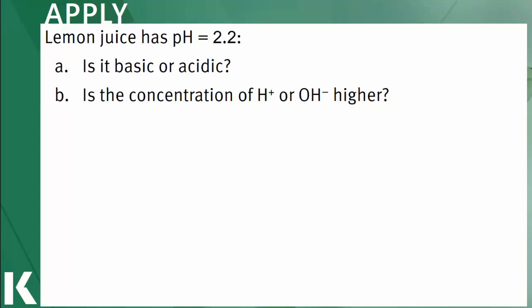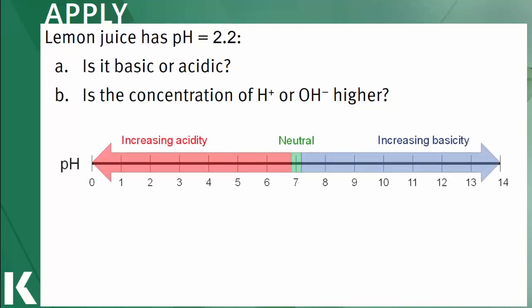In part A, the question asks whether lemon juice is acidic or basic. Remembering the pH scale, a pH of 2.2 is definitely less than 7, which means the solution is acidic. That definitely lines up with what we know about lemons.